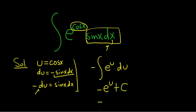And then u was cosine, so this is negative e to the cosine x plus our constant of integration, capital C. And that is the final answer.